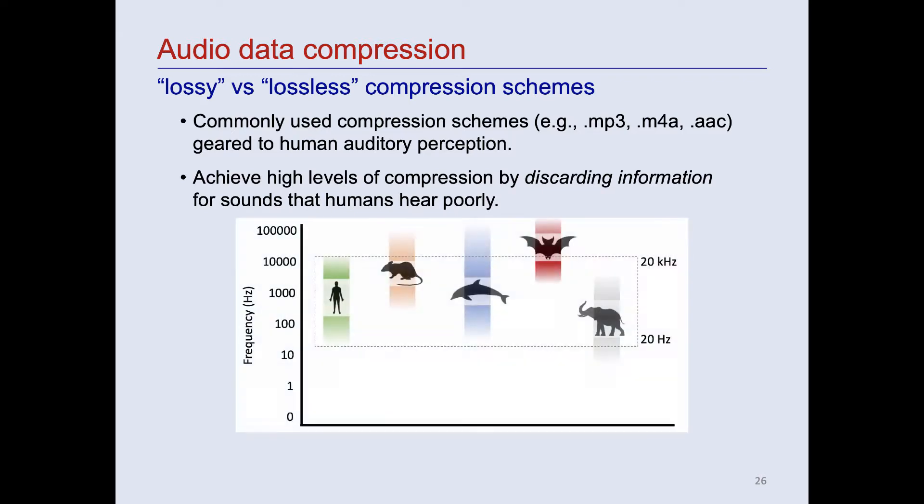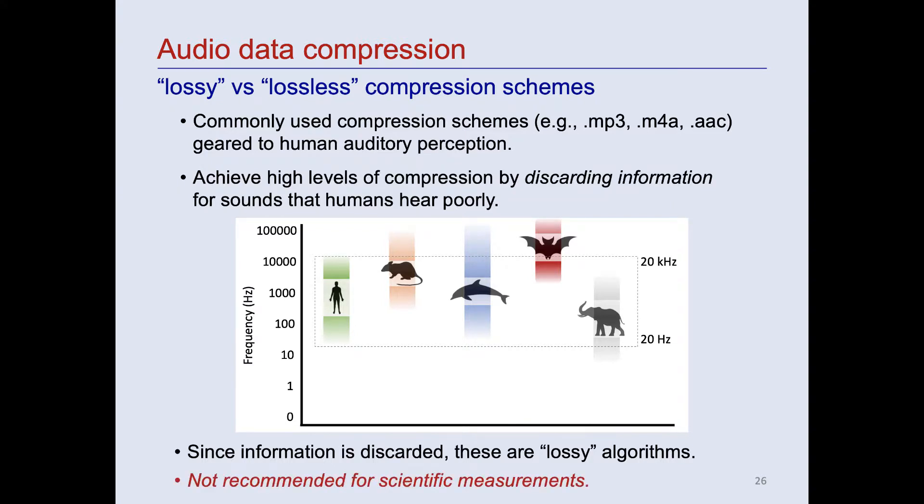They achieve high levels of compression by permanently discarding information that humans hear poorly or not at all. That can include sounds above and below our optimal hearing range that other animals hear quite well. It can also include other types of information, such as very rapid frequency modulations. Since information is permanently discarded or lost by these schemes, they're called lossy compression algorithms. Lossy compression algorithms are not recommended for scientific measurements of the detailed acoustic structure of animal sounds. If the only use of the recordings will be to identify or classify sounds that are easily audible to humans, lossy compression may be acceptable.